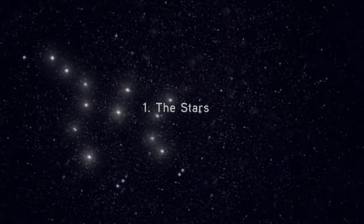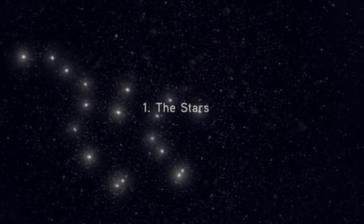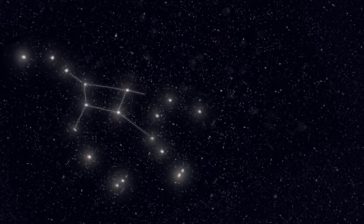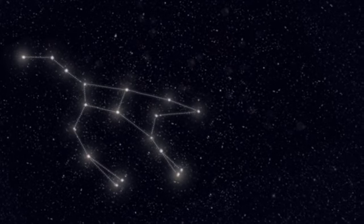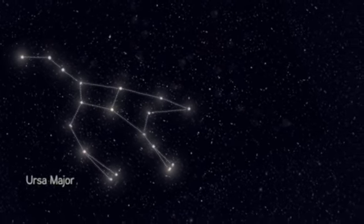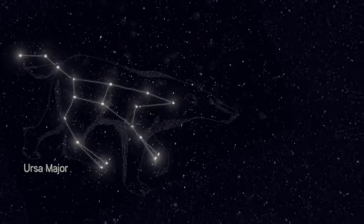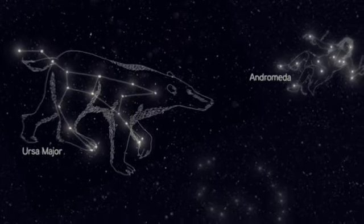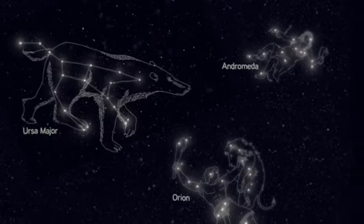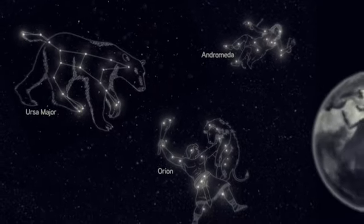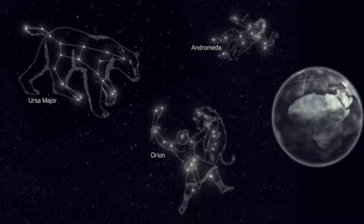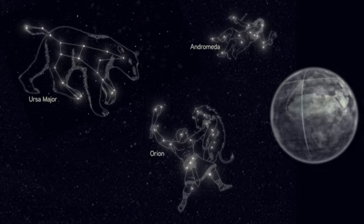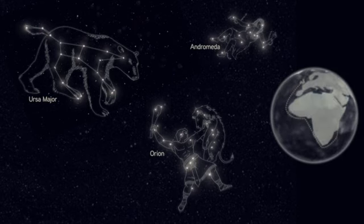Human beings have always been fascinated by the stars. For thousands of years we used our imagination to fill the sky with patterns that we call constellations. By finding pictures in the stars, we told each other stories about how the cosmos worked. We also learned to use the constellations to work out where we were, allowing us to navigate the seas and map the world.